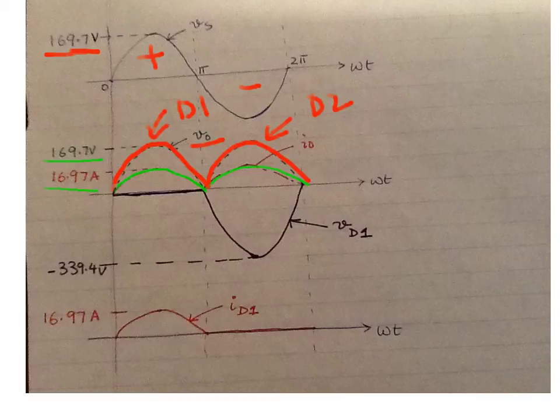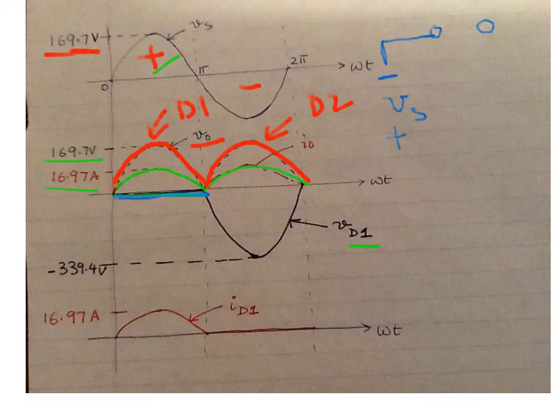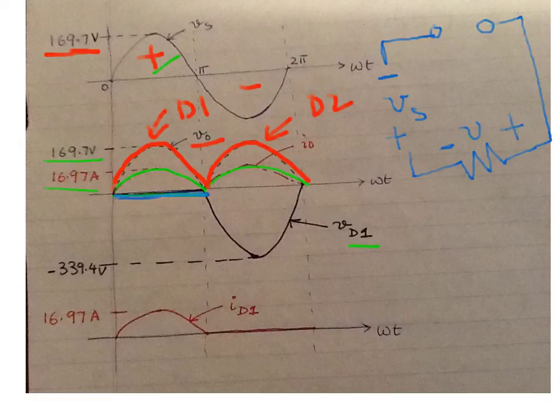Now comes the question of finding the voltage across the diode. Let's talk about D1. D1 is conducting during the positive half cycle, so when it's conducting, the voltage is zero. Now what happens when it's not conducting? Let me show you the equivalent circuit when diode D1 is not conducting. You have V_s, then an open switch, and across it is the load—this is a closed circuit where you have V_o.